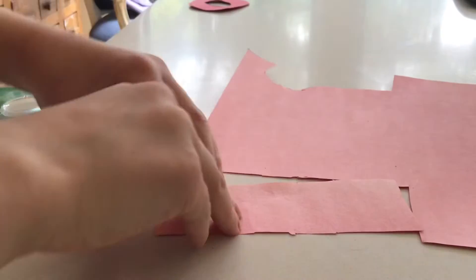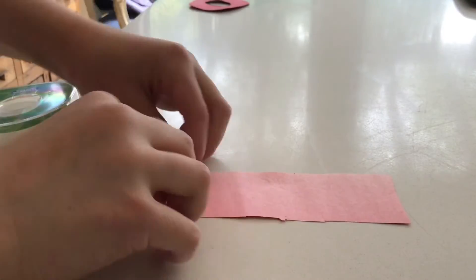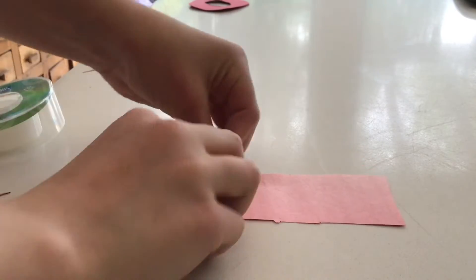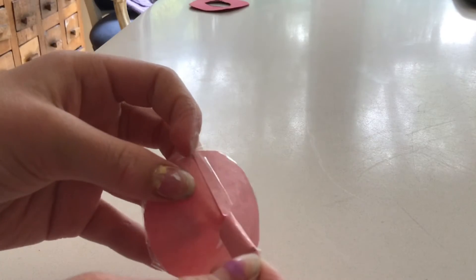Then you're going to want to cut out a rectangle out of some paper and fold it into a little roll. Then tape it together.